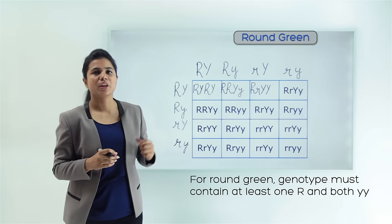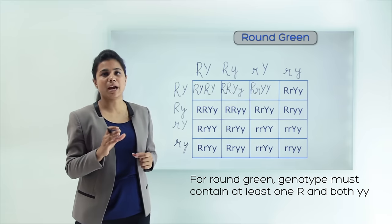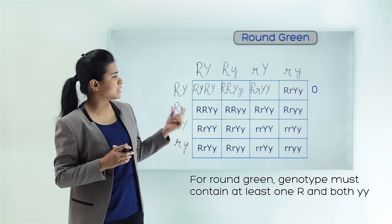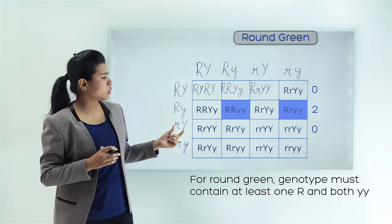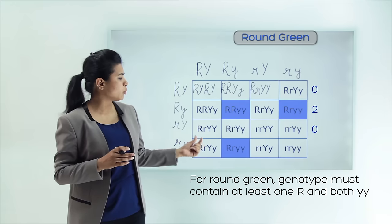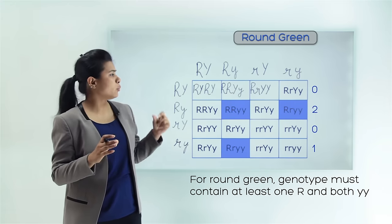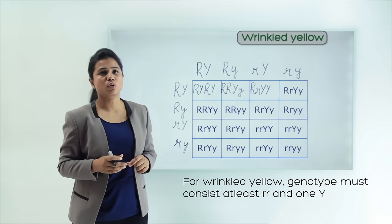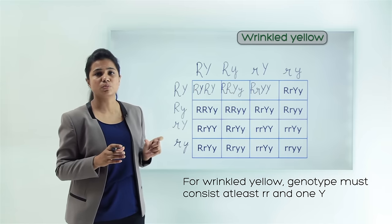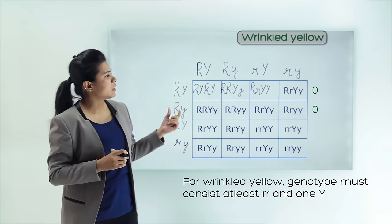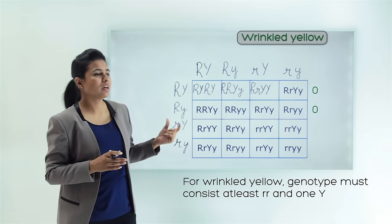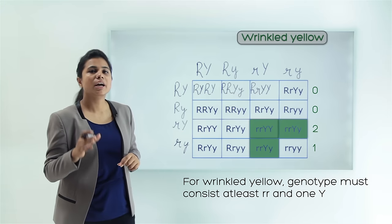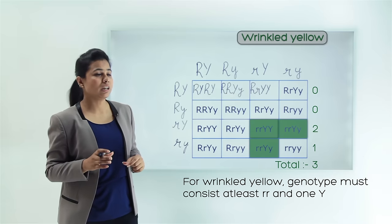Now let's count the round and green seeds. For this, the genotype must contain at least one capital R and both small y (yy). In the first row there are none. In the second row, the second and fourth cells qualify. In the third row there are none. In the fourth row, the second cell qualifies. Marking these in blue gives us 3 round and green seeds. For wrinkled and yellow, the genotype must have both small r (rr) and at least one capital Y. In the third row, the third and fourth cells qualify, and in the fourth row the third cell qualifies — giving us 3 wrinkled and yellow seeds.